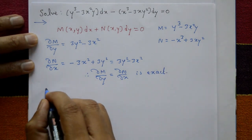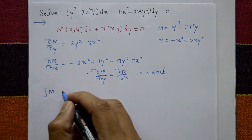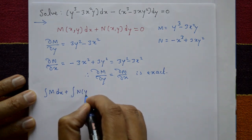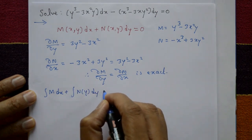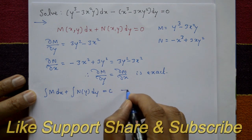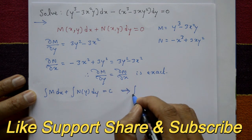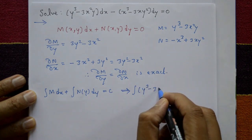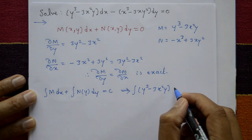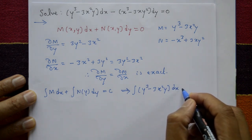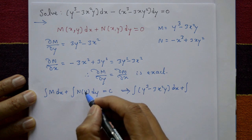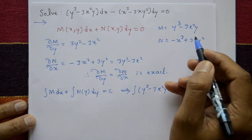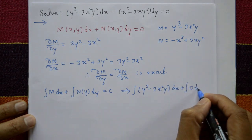Now, integration of M dx plus integration of terms in N not containing x with respect to y is equal to c. That means integration of M, which is y cube minus 3x square y, with respect to x. Both terms in N contain x variable, so 0 dy equal to c.